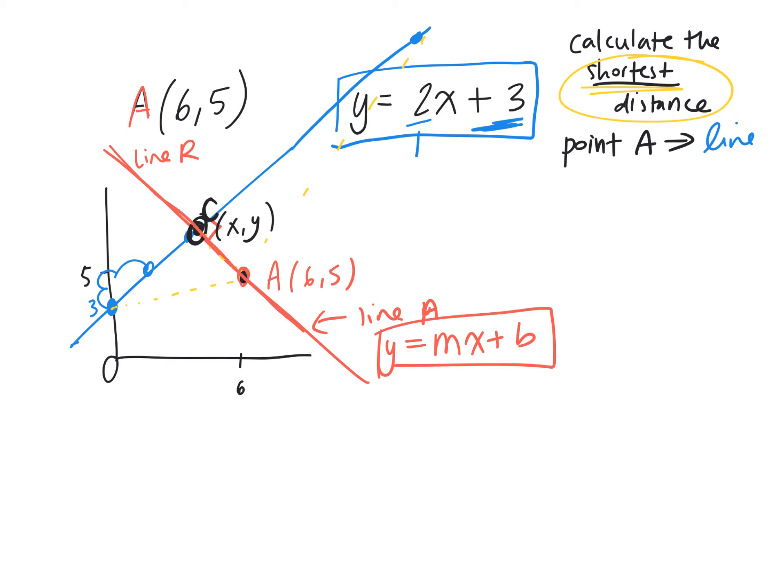It has to run perpendicular to the blue line in order for us to find the shortest distance. So we need to find the equation of a line that is perpendicular to this line. What do you know about two lines that are perpendicular? What do you know about their slopes? They're negative reciprocals.